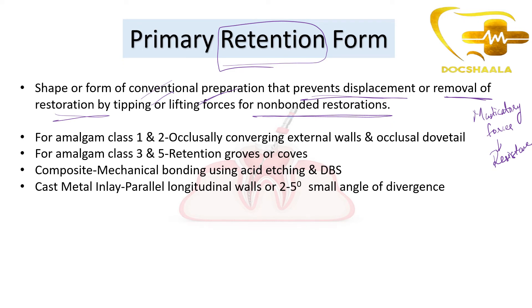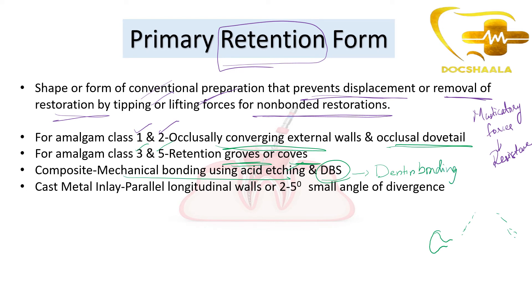For amalgam class 1 and class 2, we use occlusally converging external walls and an occlusal dovetail — a dovetail comes like this, and the walls of the tooth preparation will be occlusally converging. For amalgam class 3 and 5, retention grooves or coves are placed. For composite, retention is by mechanical bonding using acid etching and a dentine bonding system. For cast metal inlay, we use parallel longitudinal walls or a two to five degree small angle of divergence.